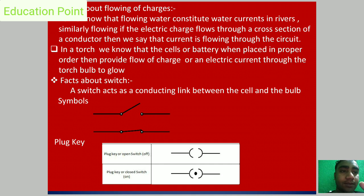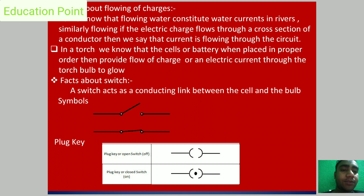Here two symbols are utilized. The first symbol of the electric switch is in the off position — that is, open circuited — and the second one is in the on position, that is, closed circuited. We also have the plug key. Two plug keys and their two notations are shown: the first one is open circuited and the second one is closed circuited.